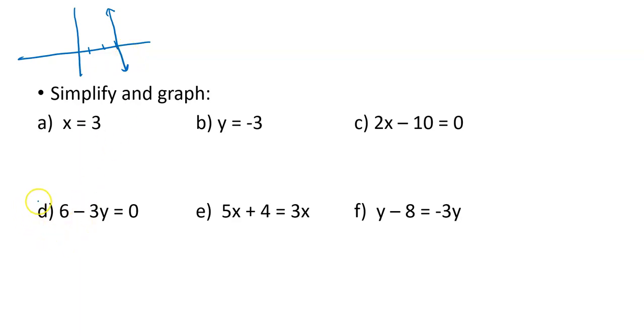Look at letter D. Letter D doesn't look like an x equals or a y equals, but it does ask us to solve it, so let's solve it. If I add 3y to both sides, I'll get my variables on one side, constants on the other. I get 6 equals 3y, divide both sides by 3, and y is 2. So yeah, this is actually a horizontal line. How do I know it's horizontal? Because it's in the form of y equals something. So if this is y equals 2, I come up here to 2 and I graph y equals 2.